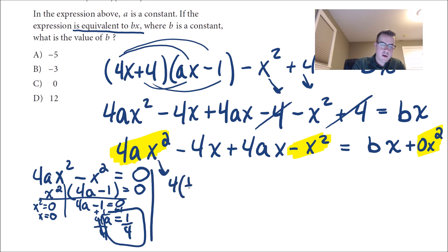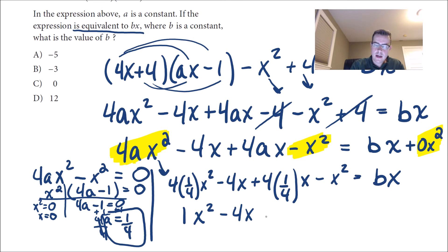We get four times one fourth x squared minus 4x plus four times one fourth x minus x squared, that has to equal bx. I'm just going to use the original problem without the zero. So if I did this here, a fourth of four just becomes one. So we have one x squared minus four x plus four times one fourth is just one x, and then minus x squared equals bx.